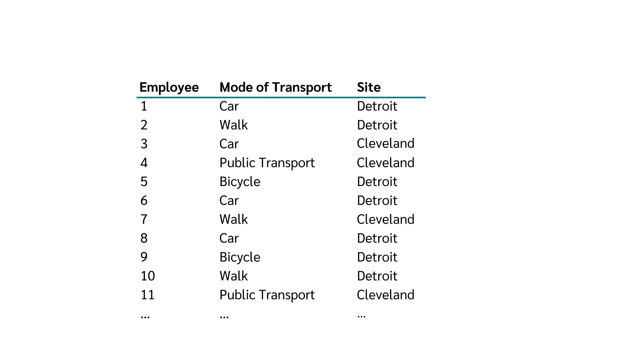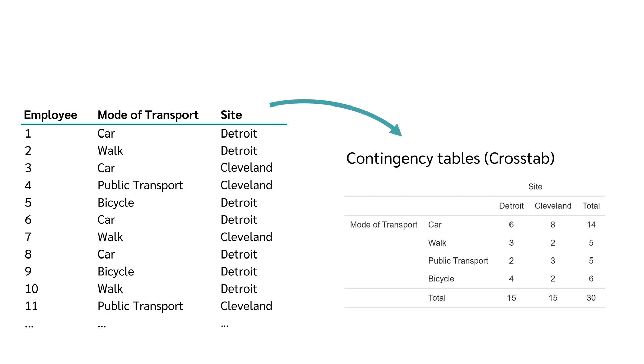But what if we have not only one, but two categorical variables? This is where the contingency table, also called crosstab, comes in.